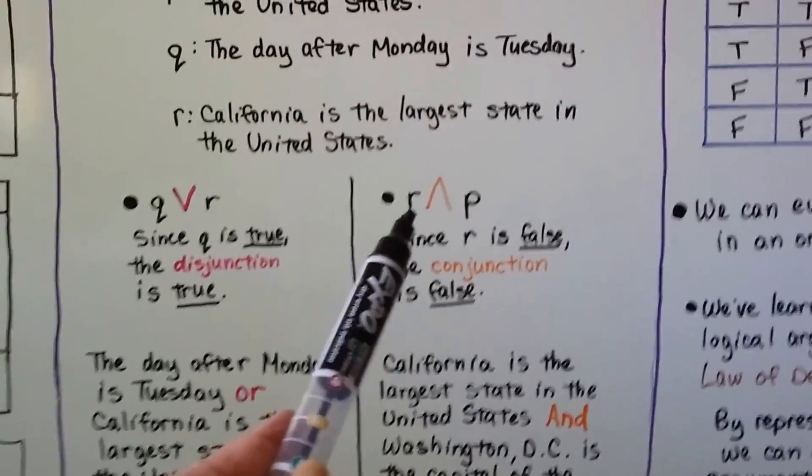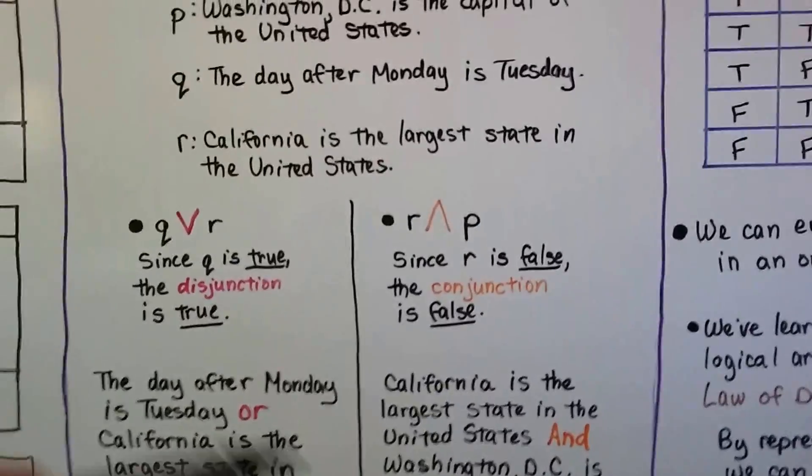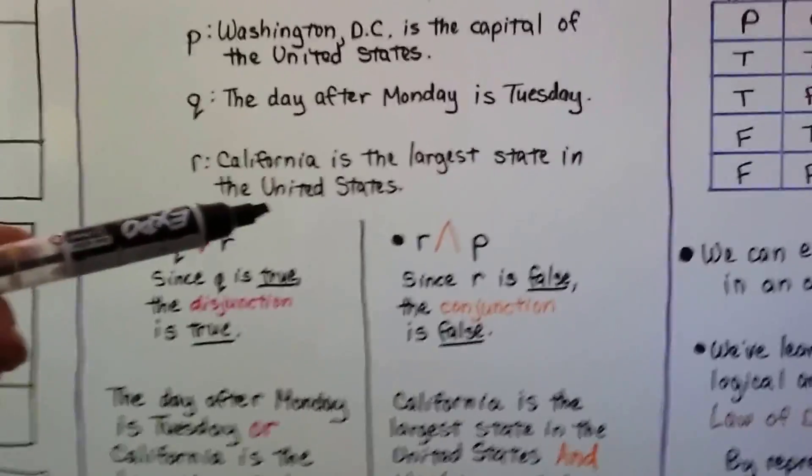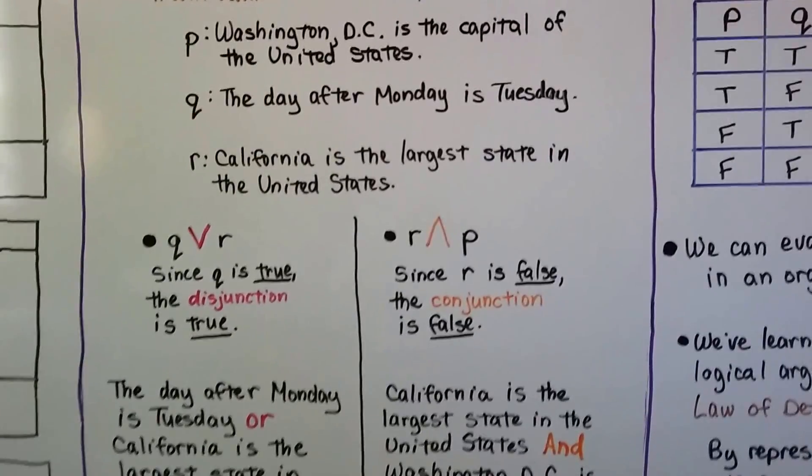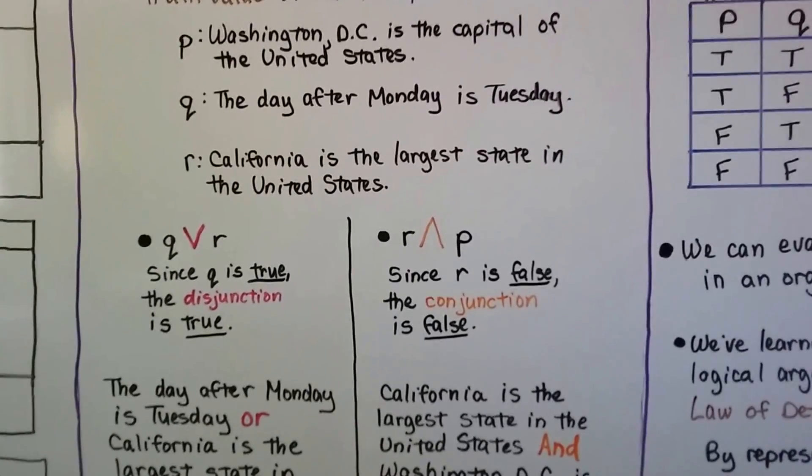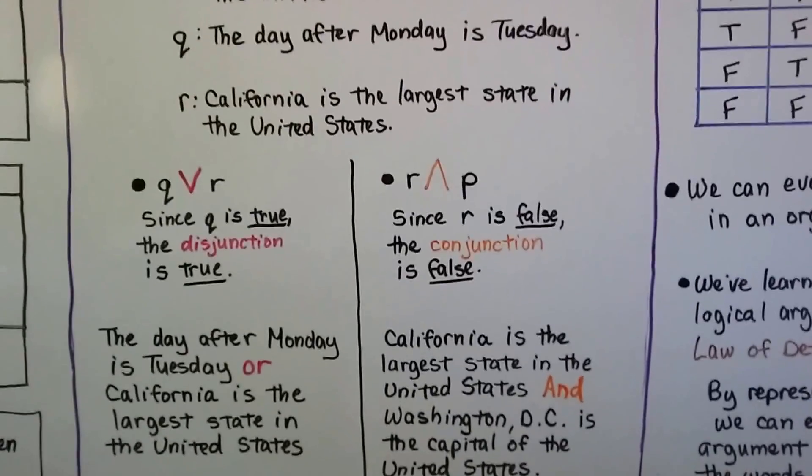If we said R and P, then we would be saying California is the largest state and Washington, D.C. is the capital. Well, since R is false, the conjunction is false because in a conjunction, they both have to be true.